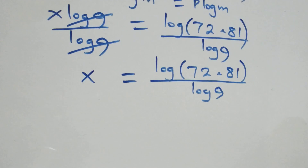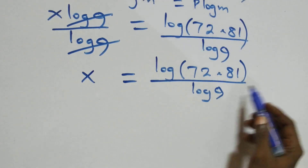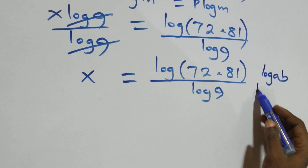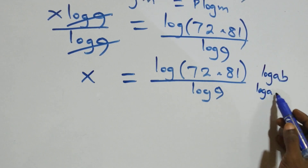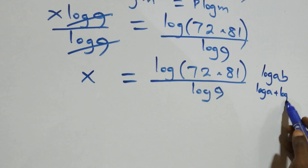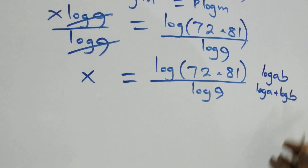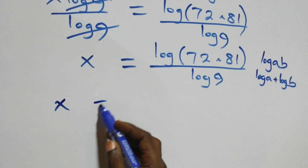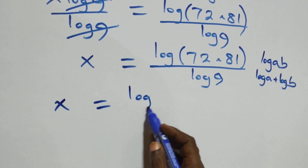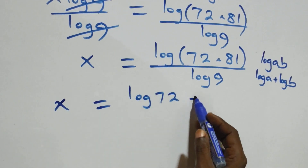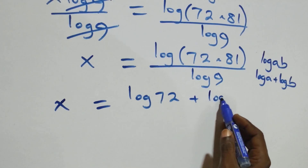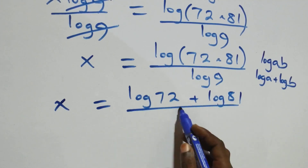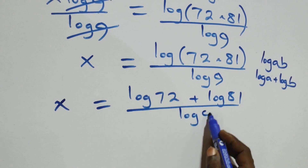This follows from the law of logarithms: log(a × b) is the same thing as log a plus log b. So what we have becomes x equals (log 72 + log 81) over log 9.